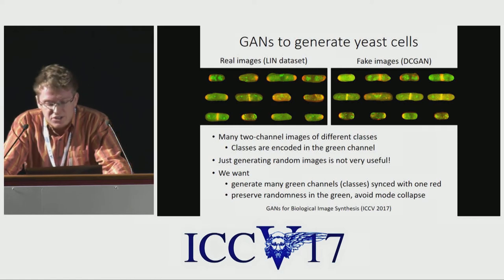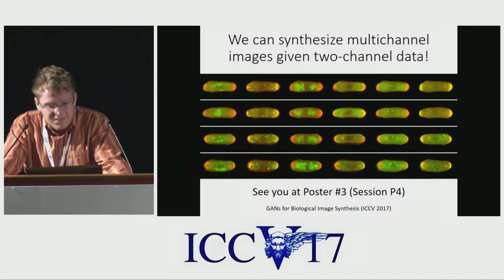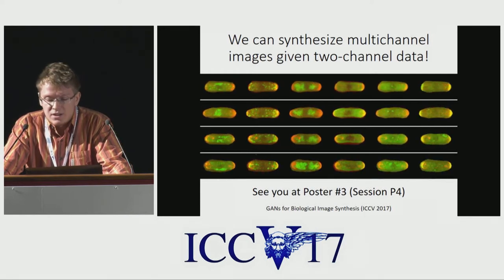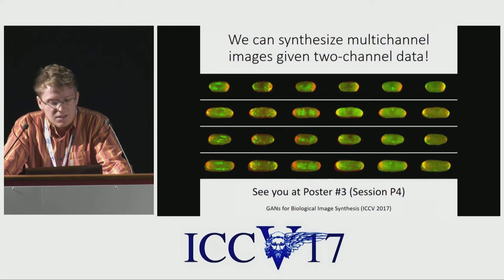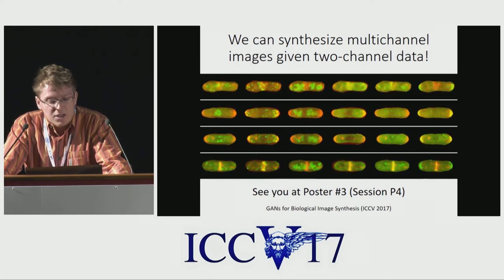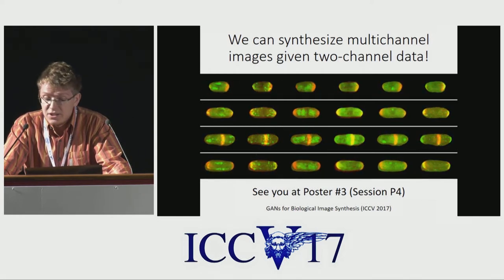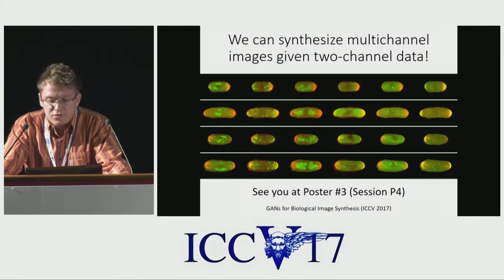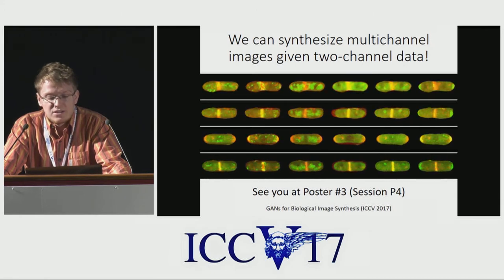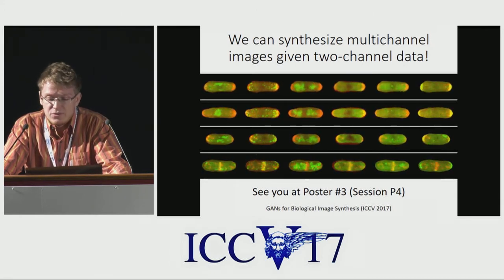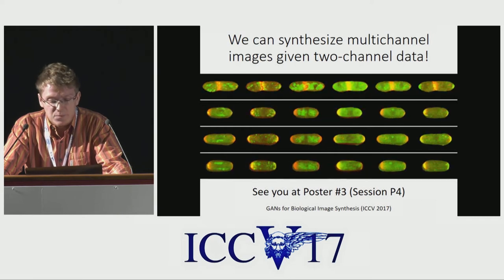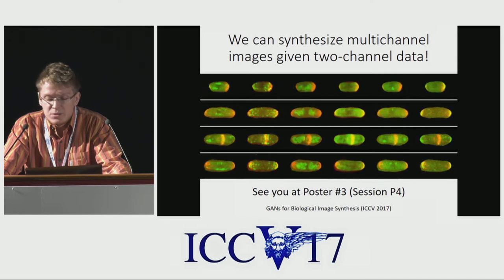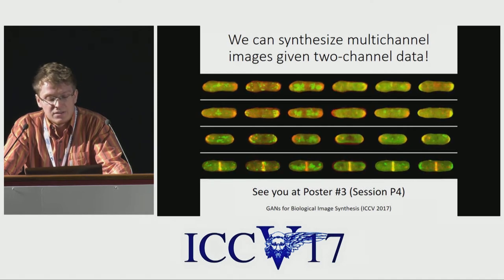To give you a teaser of what we achieved, I'm showing you a visualization of multi-channel images produced by our models that were trained exclusively on two-channel data. In this visualization, each row shows six different proteins in the green channel that are all aligned with the same red channel. Different columns correspond to different proteins of interest represented by the green channel. To construct each of these visualizations, we manually pick three synthetic images corresponding to different stages of the cell growth and interpolate between them by using the great circle in the latent space.